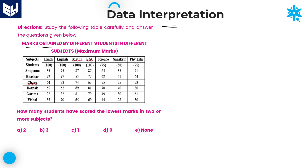The different persons are: Anupama, Bhaskha, Charu, Deepa, Garima, and Vishal. If you observe carefully, the values given in brackets indicate the maximum marks in that particular exam. So Anupama got 85 marks in Hindi out of 100, 95 marks out of 100 in English, and 87 out of 100 in Maths. In Science it is not out of 100 — it is out of 75, and she got 65 marks. We need to check each and every person's marks.